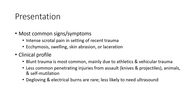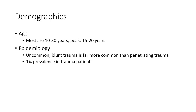Clinical profile: blunt trauma is most common, mainly due to athletic and vehicular trauma. Less common is penetrating injury from assault, animal, or self-mutilation. Disclosed pain and electrical burn are rare and less likely to need ultrasound. Most patients are 10 to 30 years old, with peaks at 15 to 20 years. Epidemiology: uncommon; blunt trauma is far more common than penetrating. Prevalence is 1% in trauma patients.